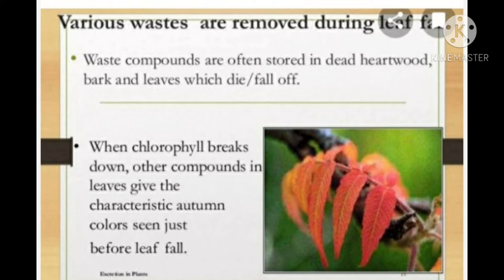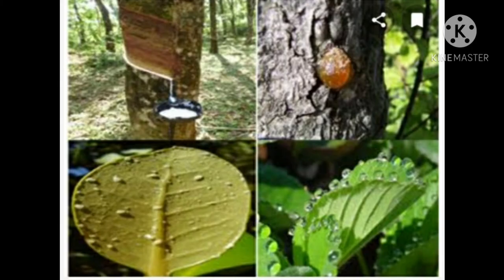In plants, waste materials may be stored in leaves, bark, and fruits. When these dead leaves, barks, and ripened fruits fall off from the tree, the waste materials are eliminated. Waste is also stored in fruits in solid bodies. Chlorophyll breaks down and other products in leaves give the characteristic autumn color seen just before leaf fall.